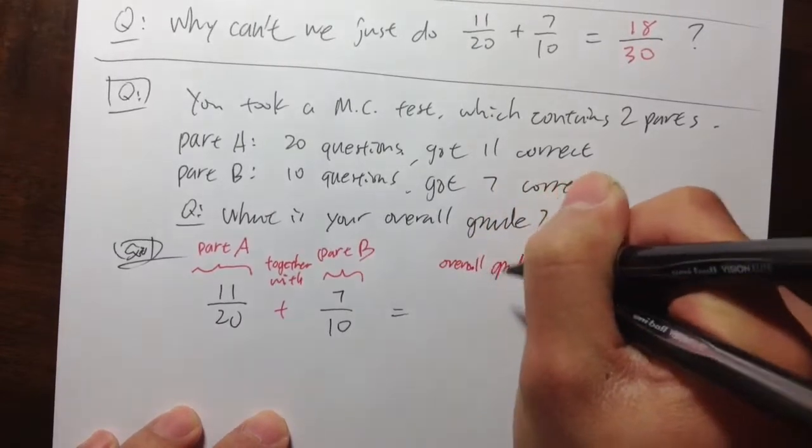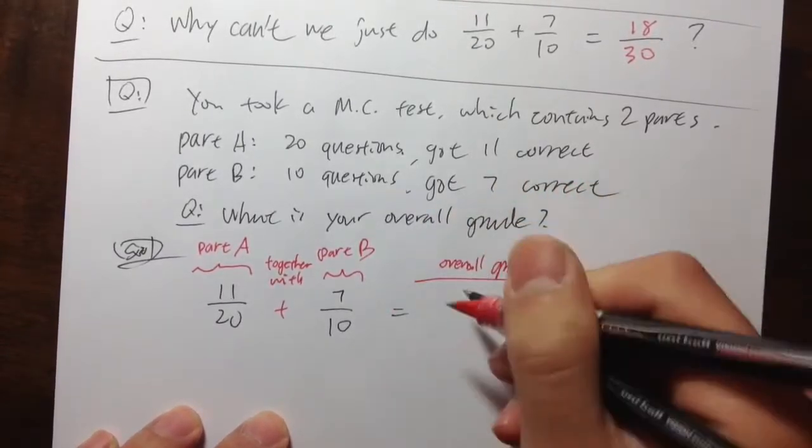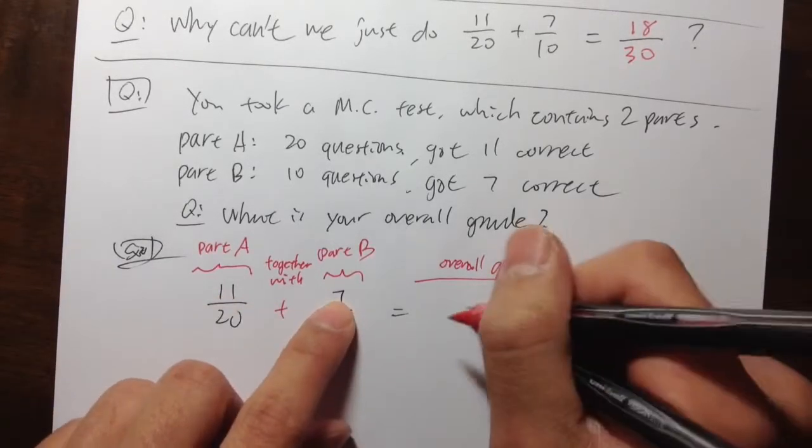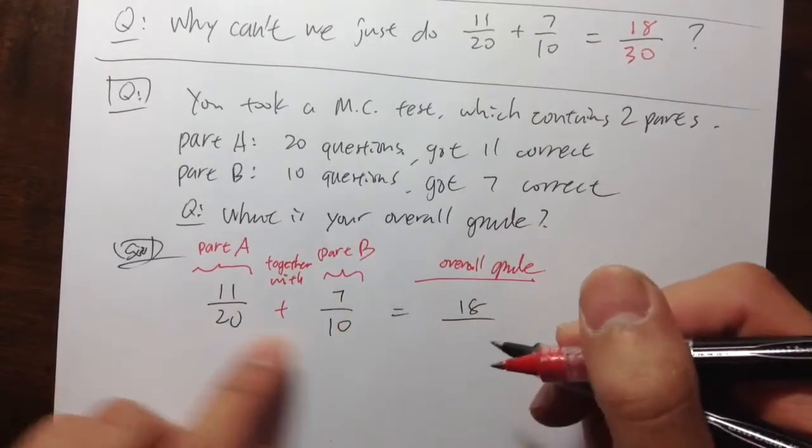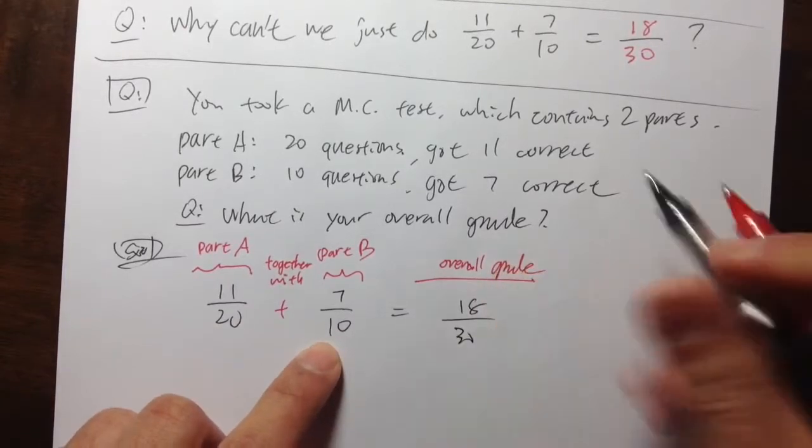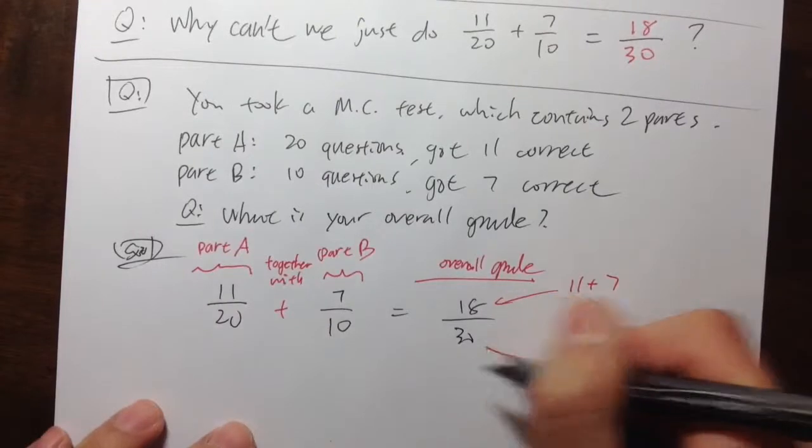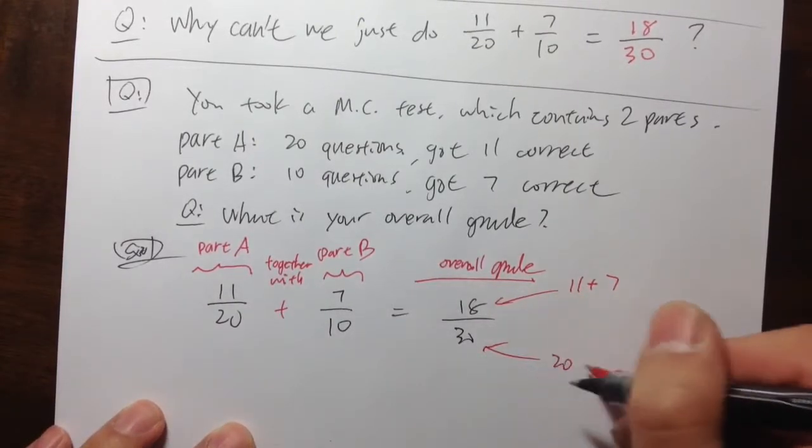What we need to do is take a look at the top. 11 plus 7, which is 18, over 20 and the 10, which gives us 30. So let me make a note. This is 11 plus 7. And how do we get the 30? This is 20 plus 10.